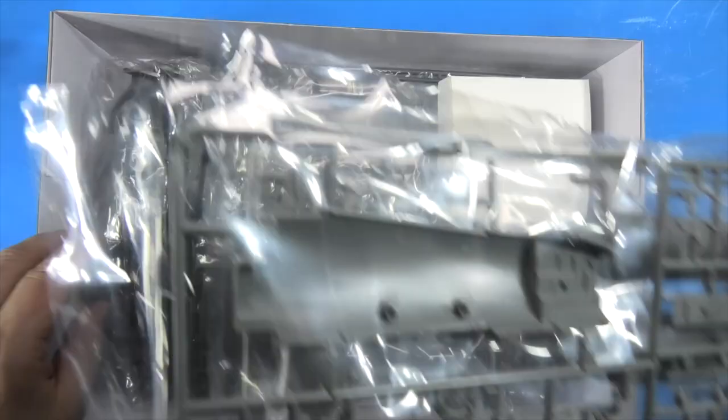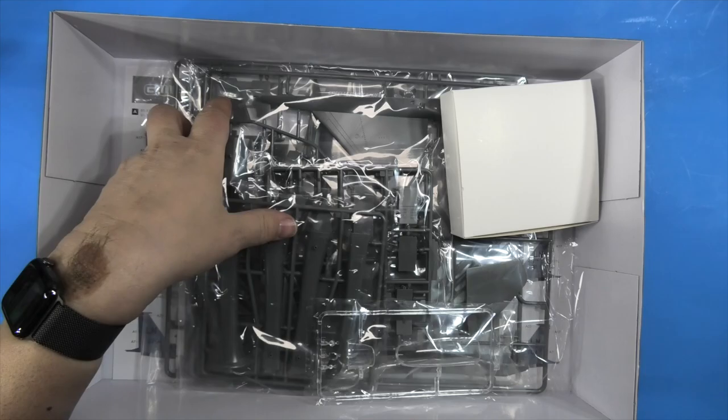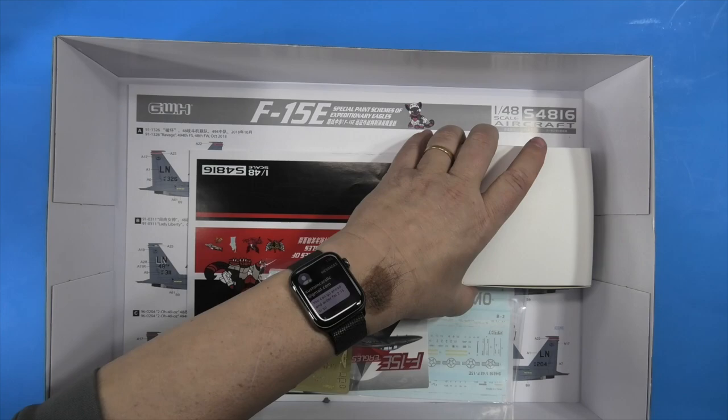We have one, two, a whole bunch of sprues. More sprues, engines, full-detail engines. Pylons, intakes, clear parts, wings, a few slower shafts, top of the wing, conformal fuel tanks, a box we'll open and surprise ourselves. Photo etch, there's a little cool card in there.